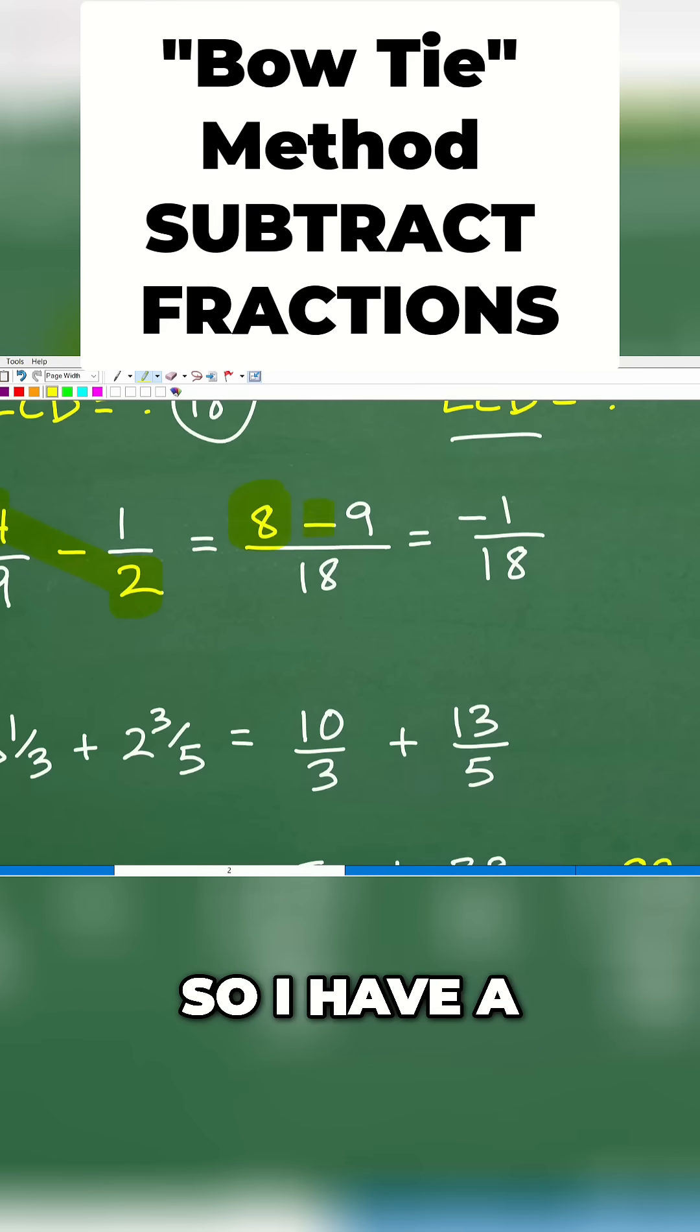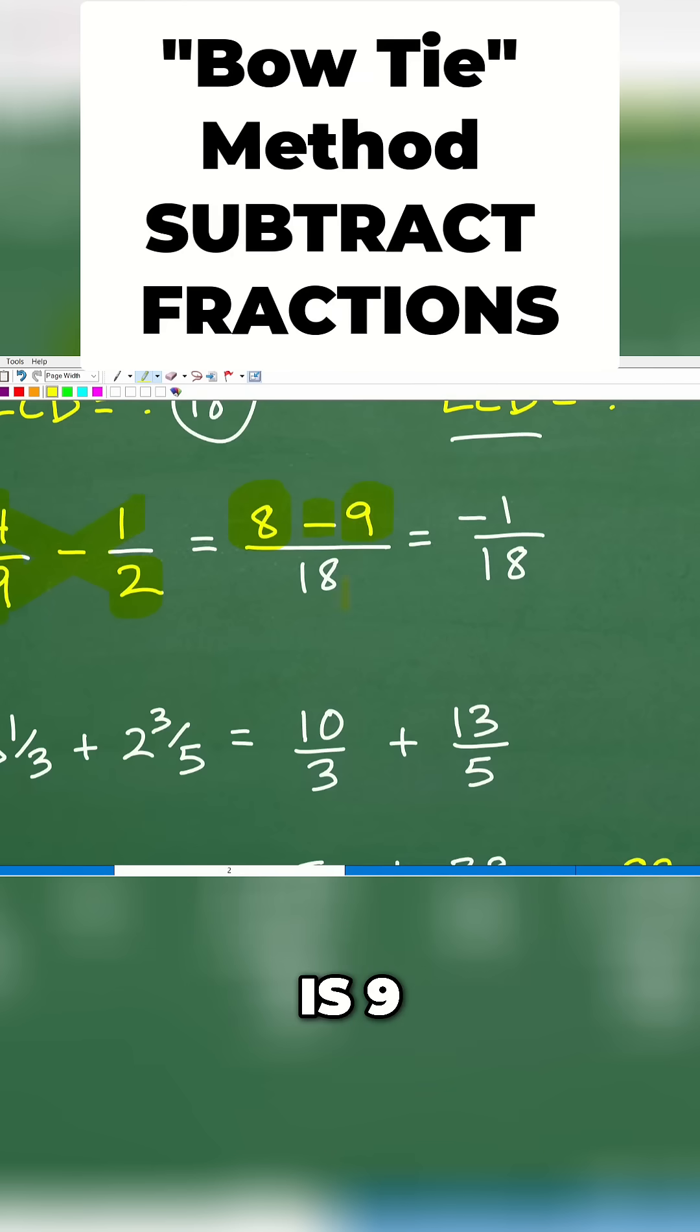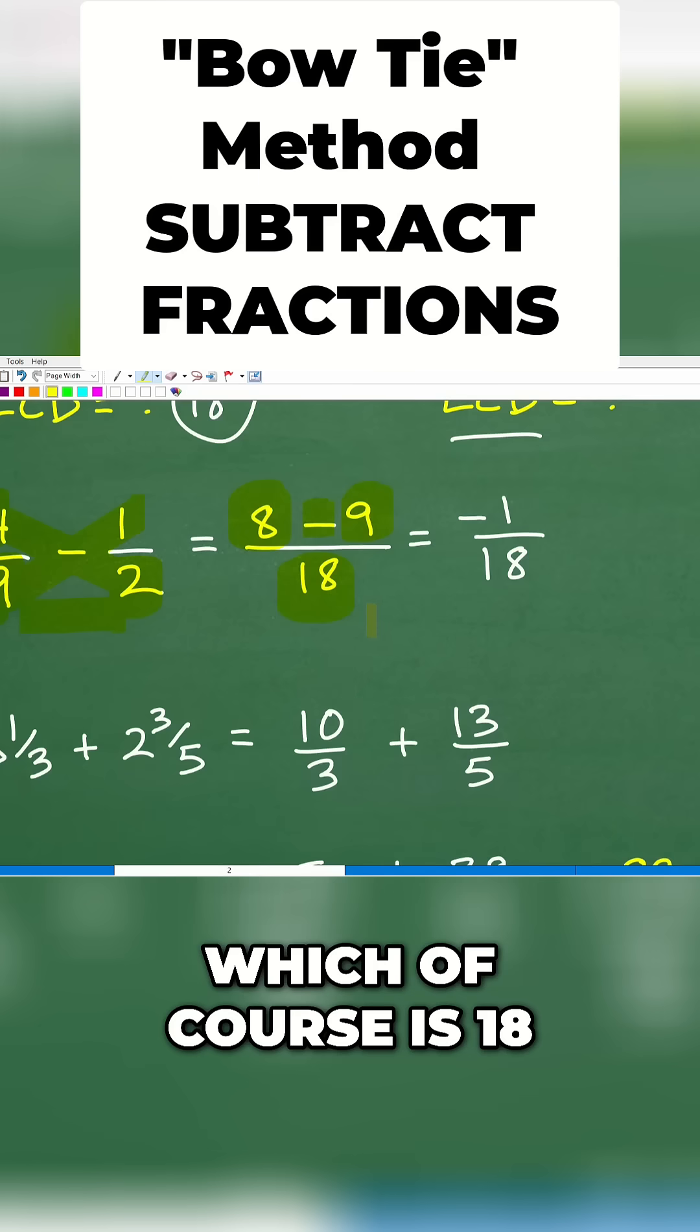This is a subtraction problem, so I have a subtraction operator there. And then 9 times 1 is 9. And then my denominator is going to be 9 times 2, which of course is 18.